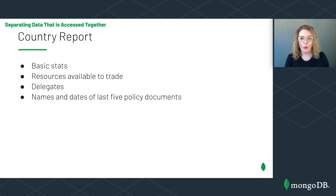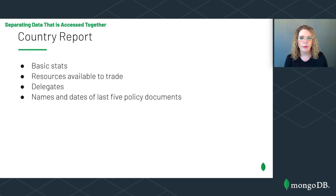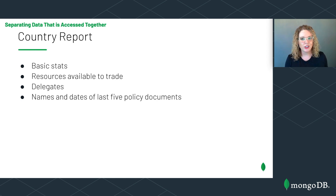In the policies collection, a country could have many policies. Here's a policy for Finland outlining their country defense policy — Finland has formally decided to use lions in lieu of military for all self-defense. Leslie wants to generate a report about Finland containing basic stats, resources available to trade, a list of delegates, and the names and dates of the last five policy documents. To generate this report, Leslie would need to use $lookup to combine information from all four collections. That's not great — remember, data that is accessed together should be stored together. Let's work incrementally to restructure the data so we can generate this report without $lookup.